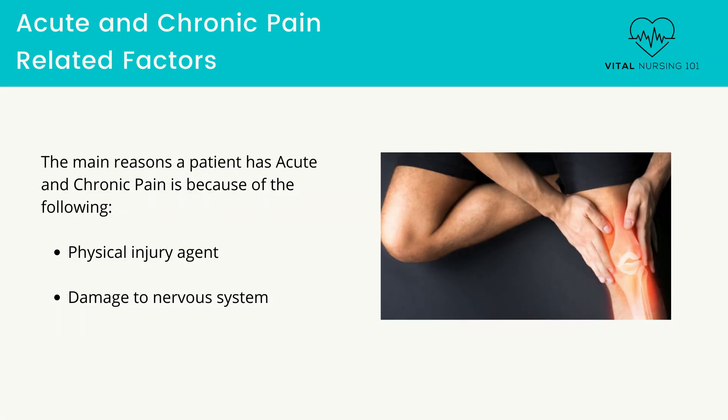What are the reasons a patient may have acute and chronic pain? The reasons include physical injury agents such as amputation and prosthesis fit, and damage to the nervous system such as phantom sensation and phantom pain.